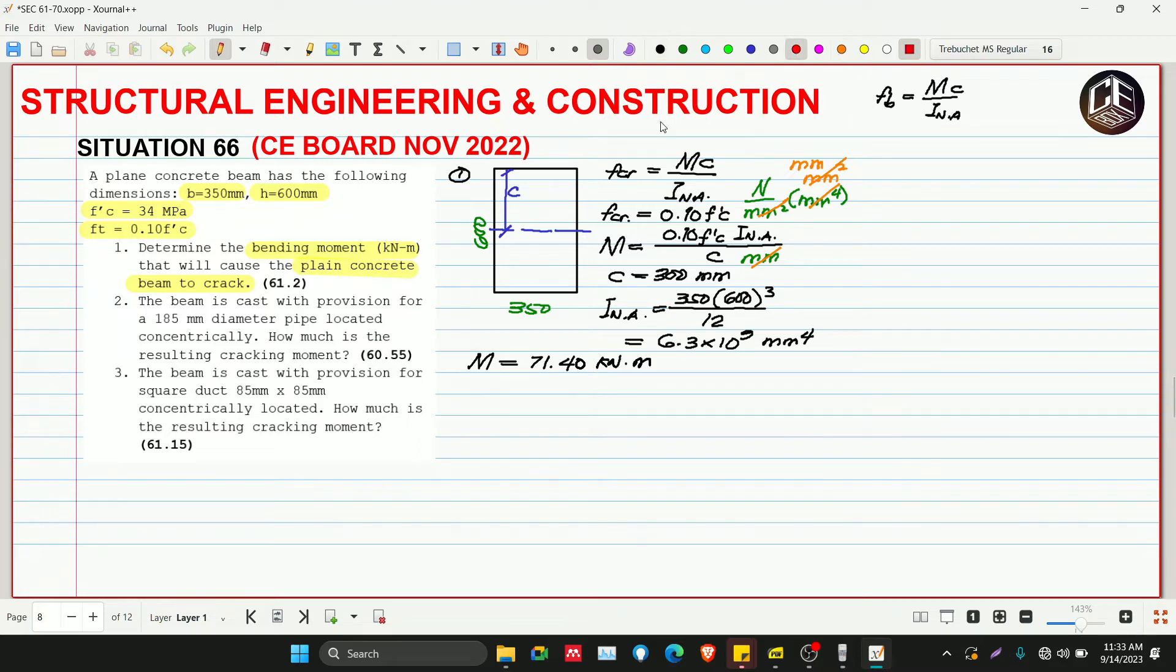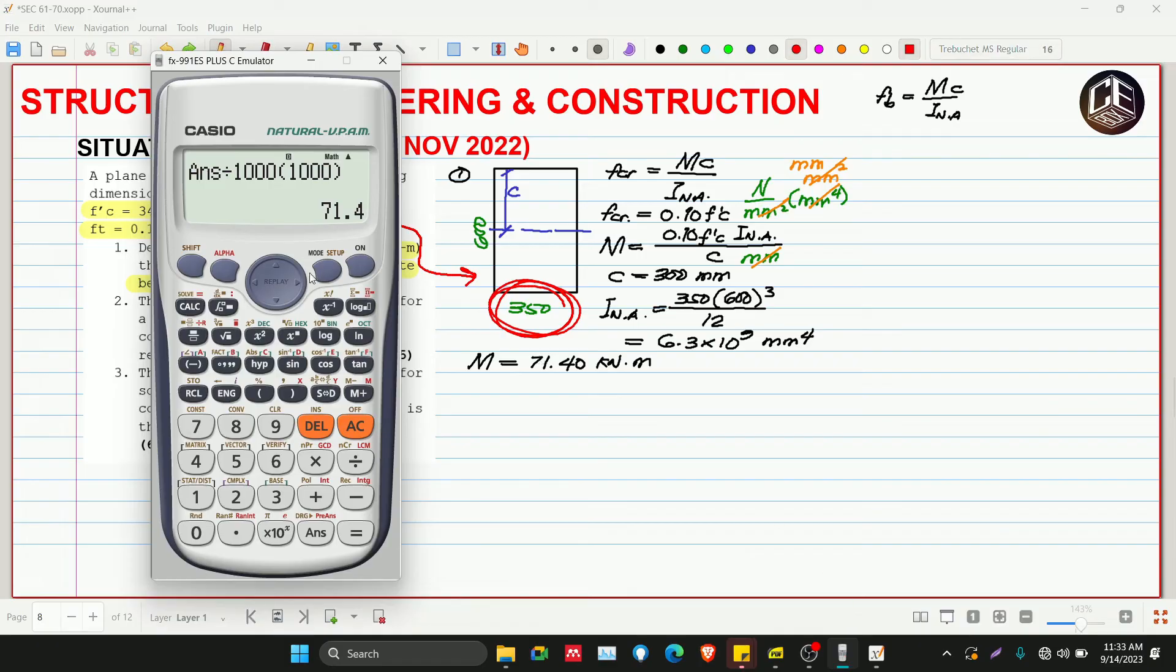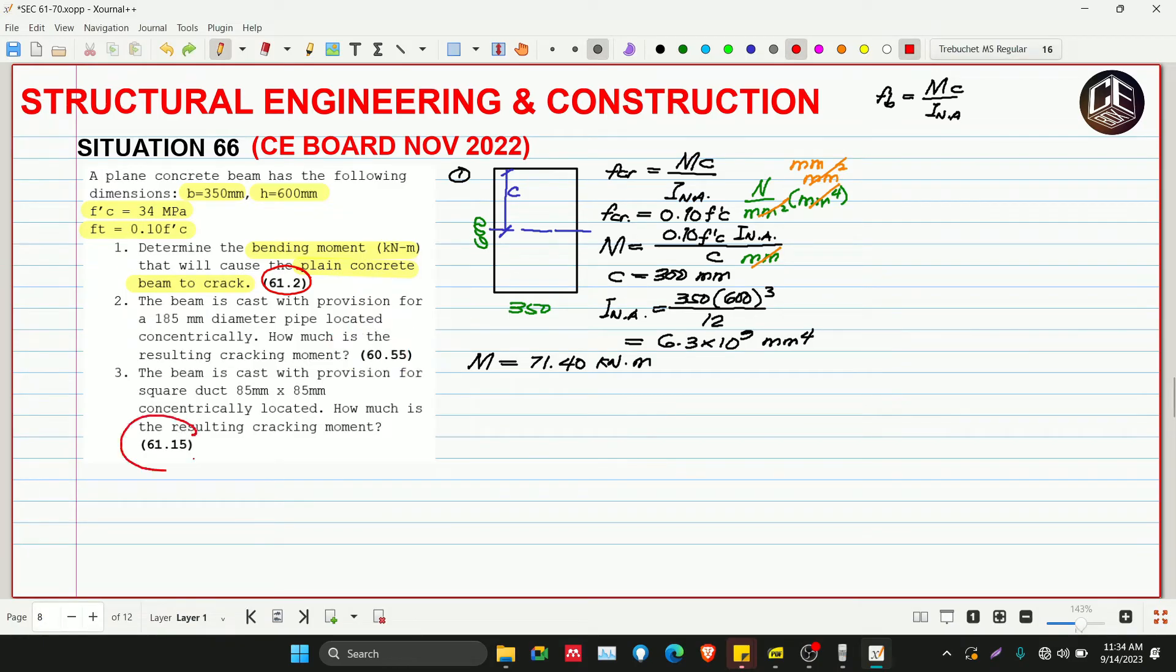Why is our answer different? The given here was 61.2 because in the reference book they used 300 instead of 350. The given is not consistent. If the given is 350, the answer is 71.4, but if the given is 300, the answer is 61.2. Let's check - we need to make this 300. 5.4 divided by 1000 squared, the answer is now 61.2. There may be inconsistency in the answers because he used 300. For numbers 2 and 3, let's use 300 millimeters.